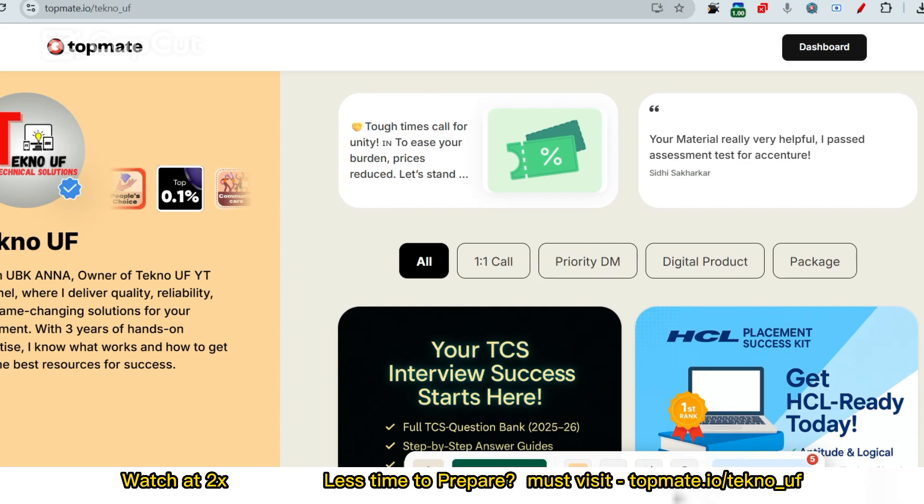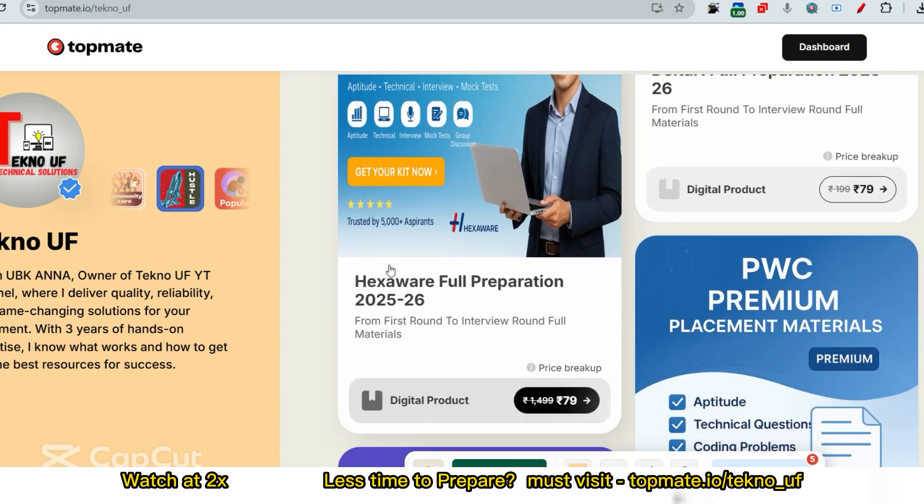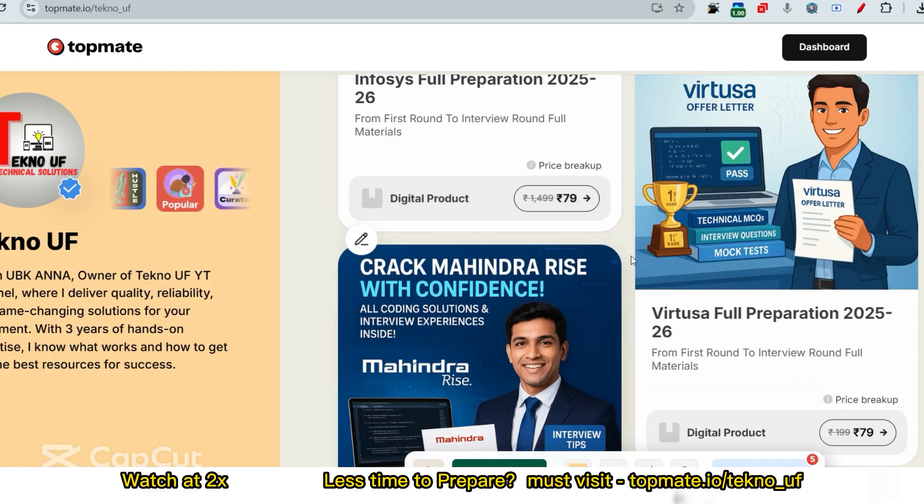At topmate.io slash Techno UF web, we have everything to prepare for Virtusa from the beginning to the end. You can see it's only 79 rupees and in return you will get a lot of packages, a lot of things.